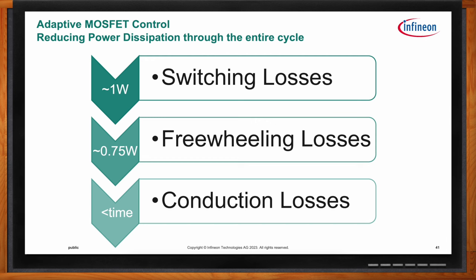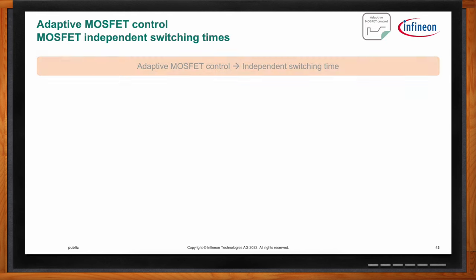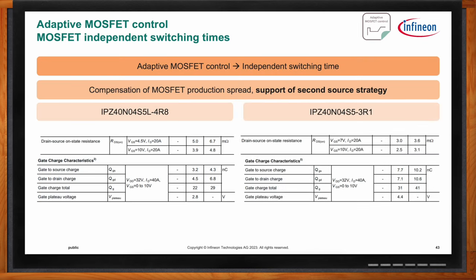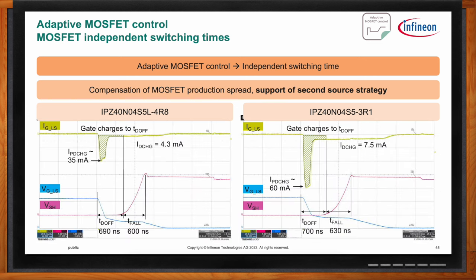The last issue on the to-do list is mitigating supply chain issues. A gate driver with adaptive MOSFET control can support a dual-source strategy for MOSFETs by enabling the same switching behavior from two disparate MOSFETs — it also compensates for MOSFET production spread and even aging. For example, a 5.8 milliohm MOSFET and a 3.1 milliohm MOSFET have very different gate charges per their data sheets, but the driver self-adjusts the charge current so that both produce the same output waveform. This makes it easy to develop a solution with two different suppliers or switch sources mid-life due to a production shortfall.